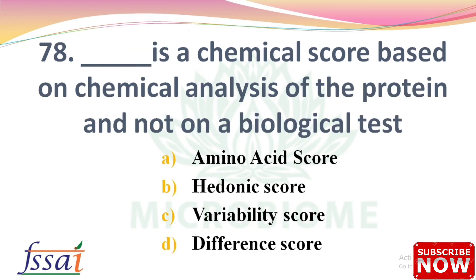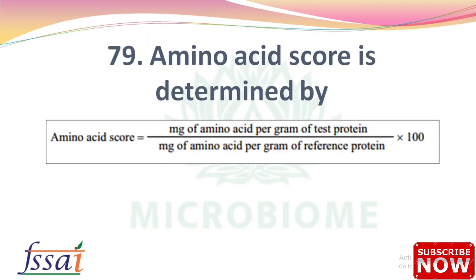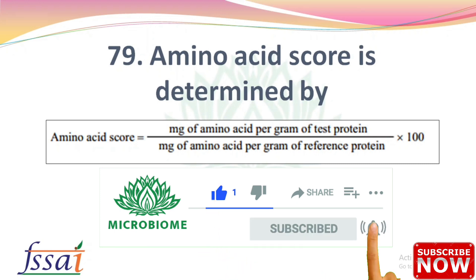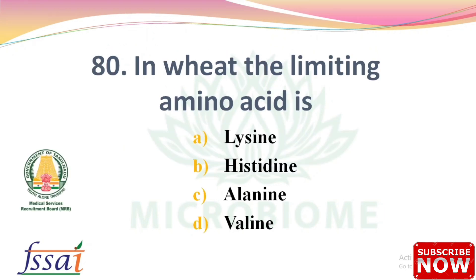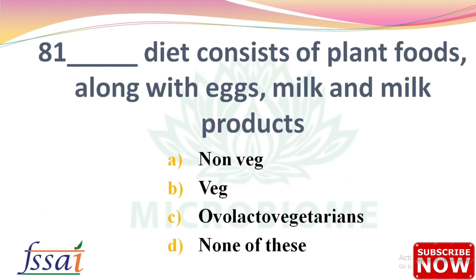Next: Dash is a chemical score based on chemical analysis of the protein and not on a biological test — options: amino acid score, hedonic score, variability score, difference score. The right answer is option A, amino acid score. Amino acid score = (mg of amino acid per gram of test protein / mg of amino acid per gram of reference protein) × 100. Next: In wheat, the limiting amino acid is — options: lysine, histidine, alanine, valine. The right answer is option A, lysine.